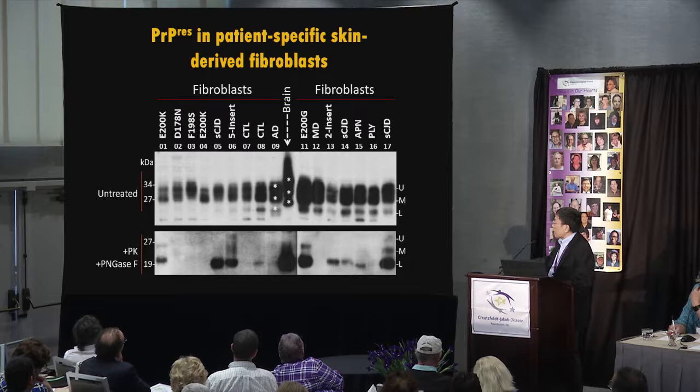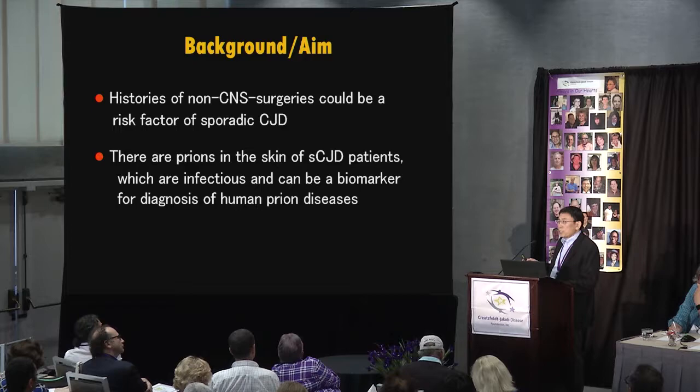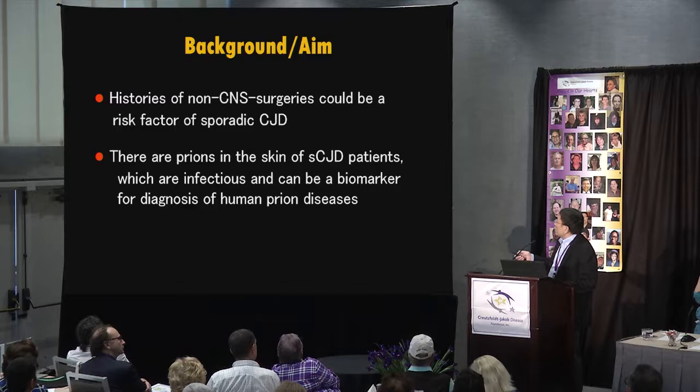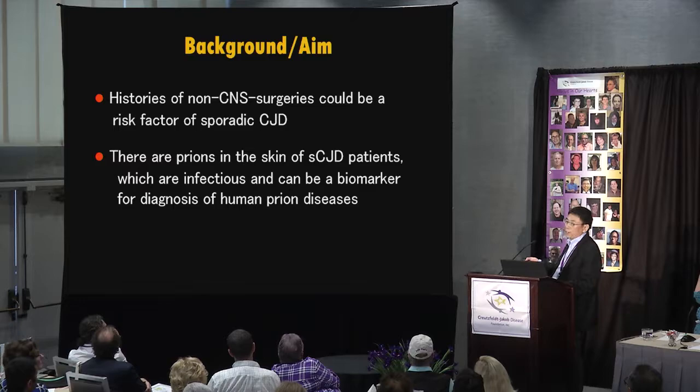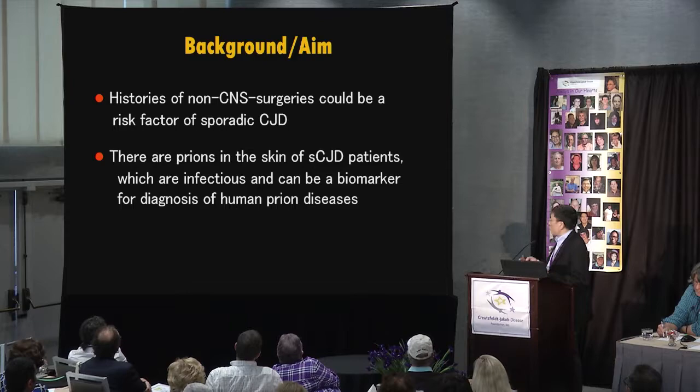Notably, epidemiological studies have also associated SCJD risk with non-central nervous system surgeries, proposing that a history of non-CNS surgery could be a risk factor for sporadic CJD. So the aim of our study was to test the hypothesis that there are prions in the skin of SCJD patients, which are infectious and can serve as a biomarker for diagnosis of human prion disease.